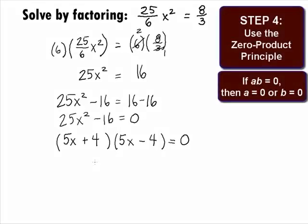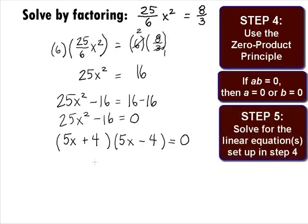In Step 4, we want to use the Zero Product Principle. This principle states that if you have a product of two factors set equal to 0, then the solution can be found by setting each separate factor equal to 0. We will also go into Step 5, which is to solve the linear equation set up in Step 4.